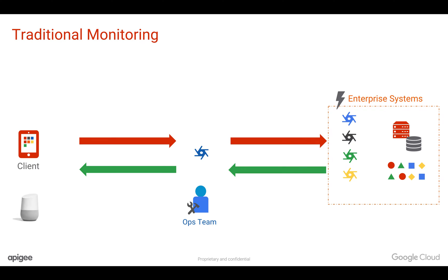Also, SLAs are different for different devices. For example, when you are talking to Google Home, the SLA is different. When you're accessing an application through a mobile phone, the SLA is different. So how do you manage the SLAs for different devices that are accessing your data and services? Today, you do synthetic monitoring — you come up with a set of use cases and then make API calls to test whether that API is running or not. But the problem is there can be N number of use cases that you cannot come up with in real time.